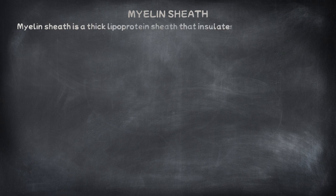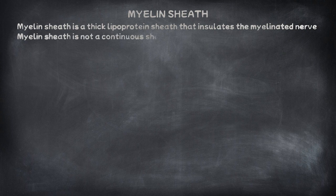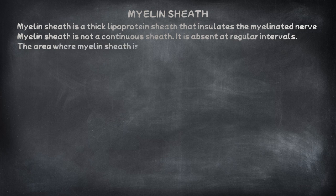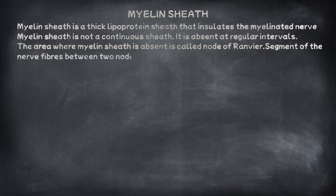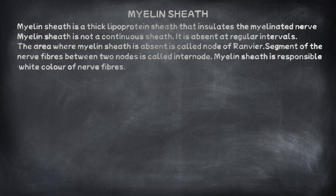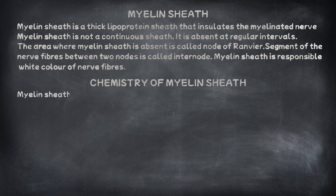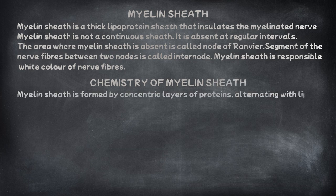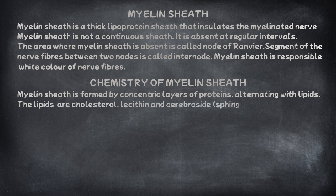The myelin sheath is a thick lipoprotein sheath that insulates myelinated nerve fibres. It is not a continuous sheath — it is absent at regular intervals. The area where the myelin sheath is absent is called the node of Ranvier. The segment of nerve fibres between two nodes is called the internode. The myelin sheath is responsible for the white colour of nerve fibres. Chemically, the myelin sheath is formed by concentric layers of proteins alternating with lipids — the lipids being cholesterol, lecithin, cerebroside, and sphingomyelin.